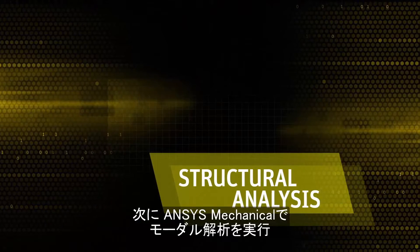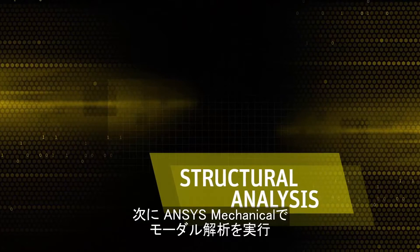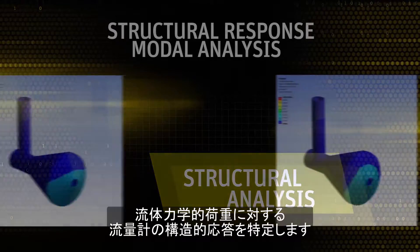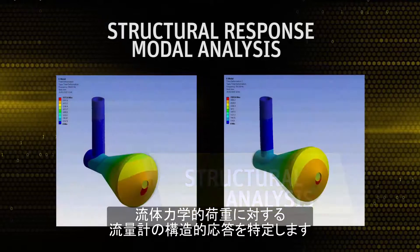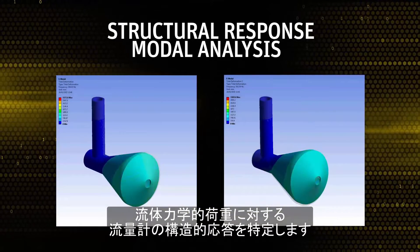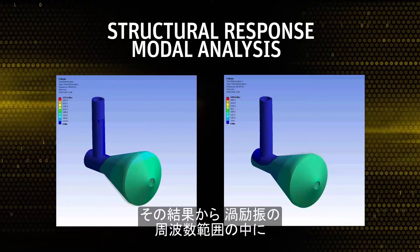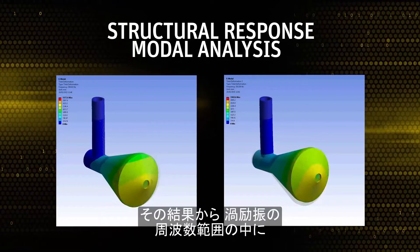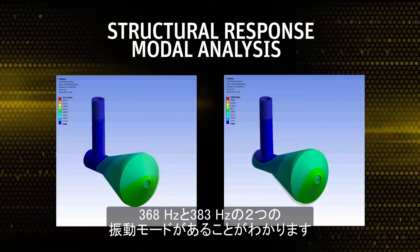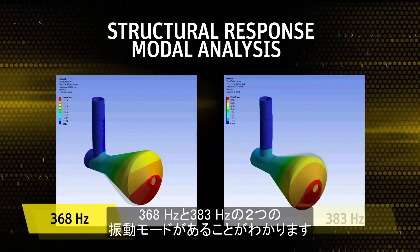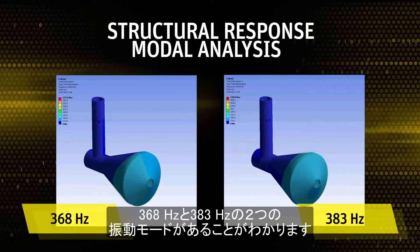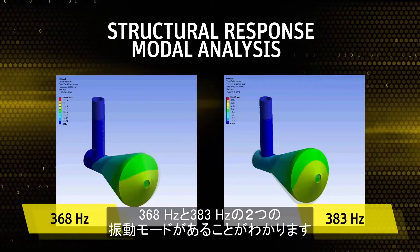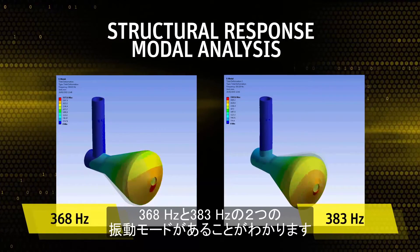ANSYS Mechanical can then be used to perform modal analysis to determine the structural response of the flow meter to the fluid dynamic loads. The results from the simulation showed that two modes of vibration at 368 Hz and 383 Hz are in the frequency range of the excitation from the vortex shedding.